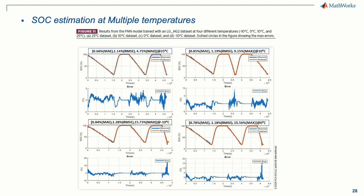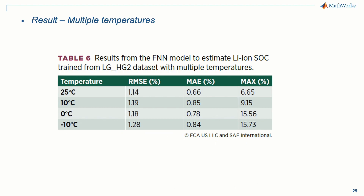Using the final structure we have been discussing, an FNN-based model was trained on a dataset containing multiple temperatures, including negative 10 degrees Celsius. As shown in Figure 11, the model performed incredibly well at all temperatures. Even at negative temperatures, where SOC estimation becomes considerably more challenging, it performed very well under such difficult conditions. Table 6 shows a summary of the results, where the RMS error was kept close to 1.2% in all temperature cases, and under 1% on the mean absolute error.